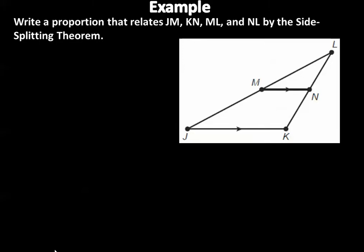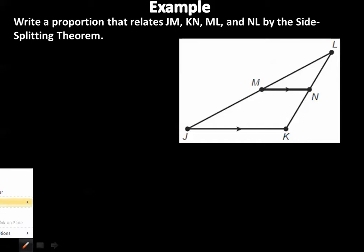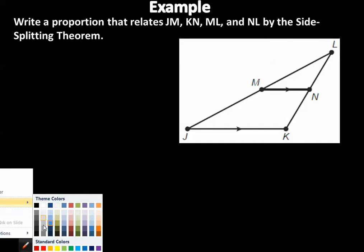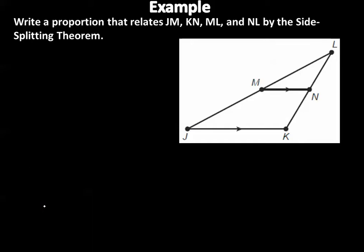Now let's work some problems. The first problem says: write a proportion that relates JM, KN, ML, and NL by the Side Splitting Theorem.